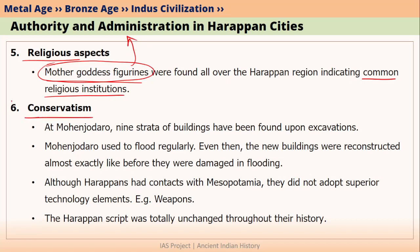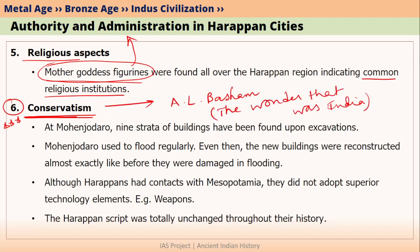The last and most important feature — which is not written in most books — is the conservatism of Harappan civilization people. This topic is discussed in A.L. Basham's book, The Wonder That Was India. Basically, along the Indus river, the major site is Mohenjo-daro, located on the banks of the river Indus in Pakistan. During excavations at Mohenjo-daro, we have found 9 strata of buildings — 9 layers in which different buildings were found.